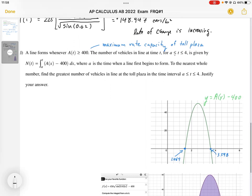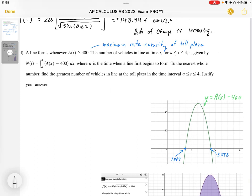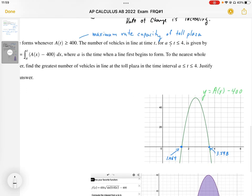I've graphed A(x) - 400, and that tells me when A(x) equals 400, which is at 1.469 hours. We also need to know time T where it continues accumulating, where A is above 400, so we have too many cars coming through and it starts backing up. It backs up from 1.469 hours to the other point at 3.598 hours.